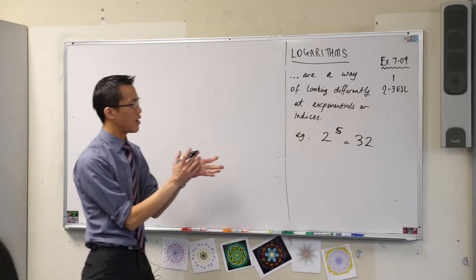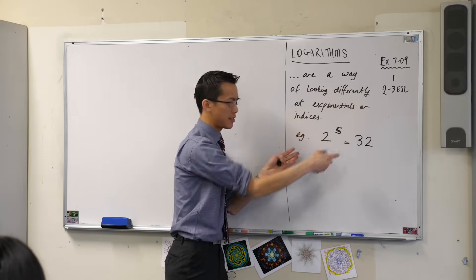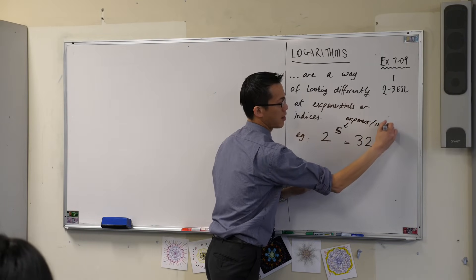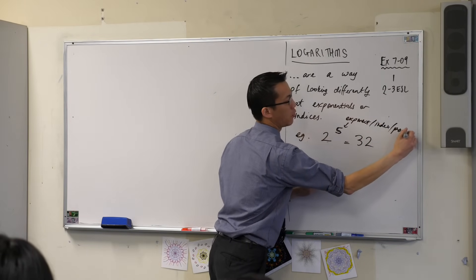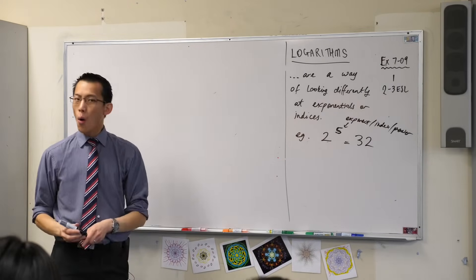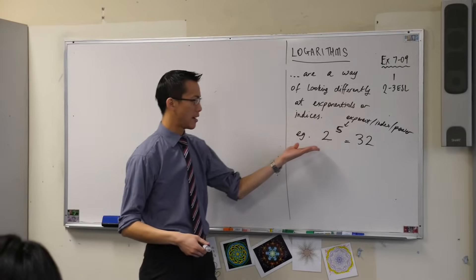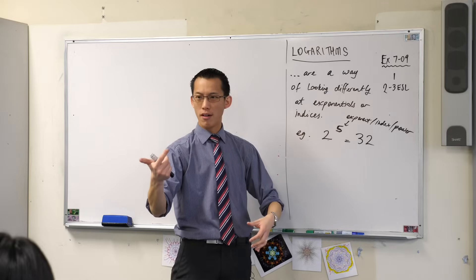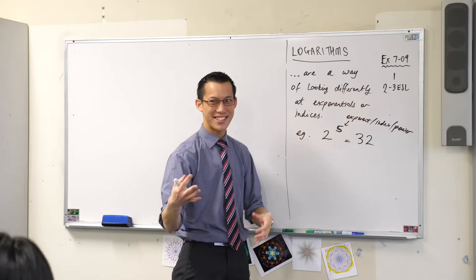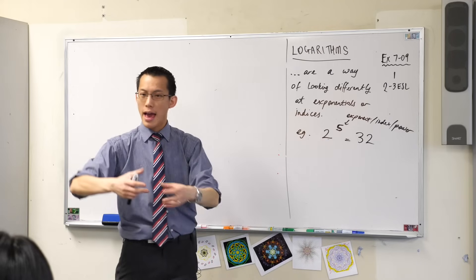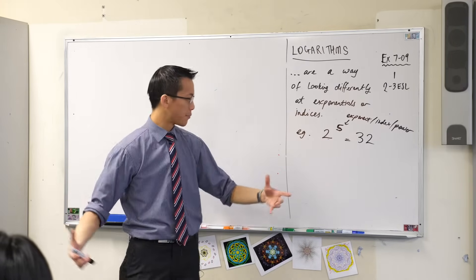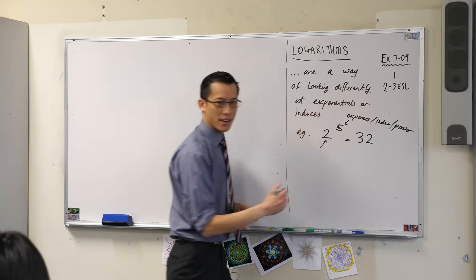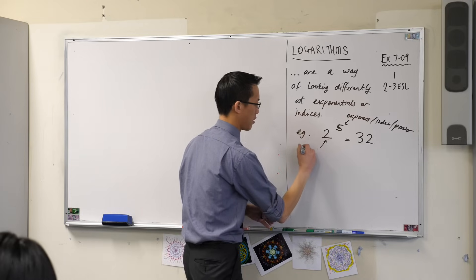With an exponential like this, that's called the exponent, or the index, or the power — all different words for the same thing. What you're doing is looking at something that's doubling in size: 2, 4, 8, 16, 32, 64, 128, and so on, growing and growing. So it's kind of like a growth rate — this is like a growth rate.